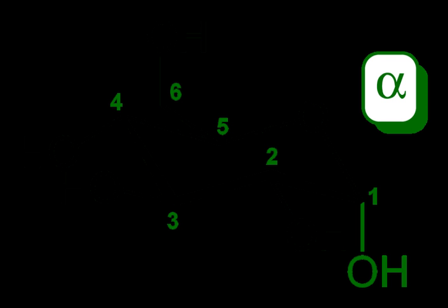It is important to note that the linear form of glucose makes up less than 0.02% of the glucose molecules in a water solution. The rest is one of two cyclic forms of glucose that are formed when the hydroxyl group on carbon-5 bonds to the aldehyde carbon-1.